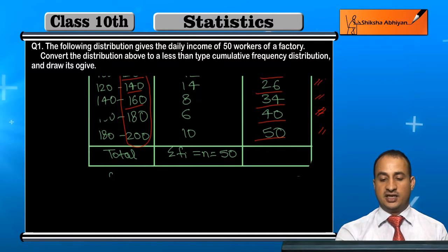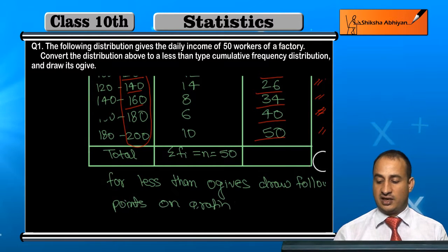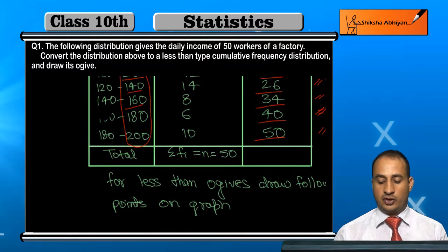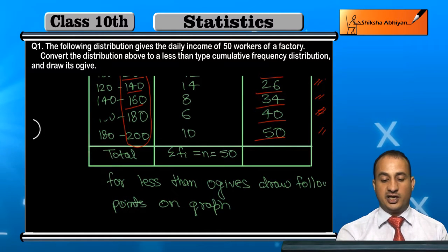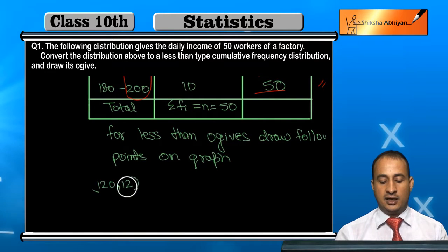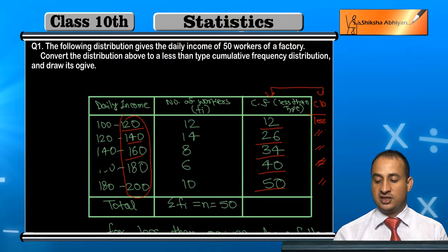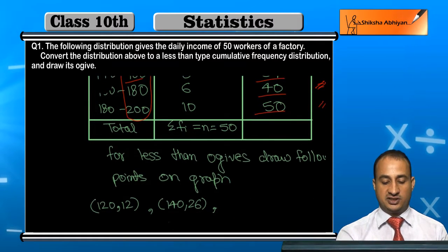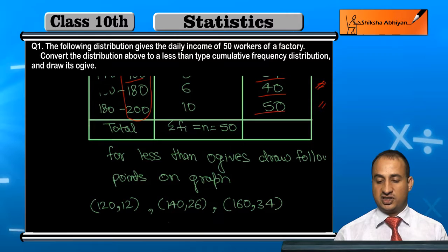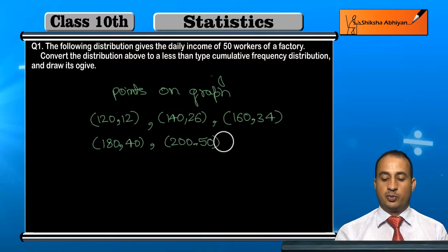For the less than ogive, we plot the following points on graph paper. The first point is (120, 12), next is (140, 26), then (160, 34), then (180, 40), and the last point is (200, 50).